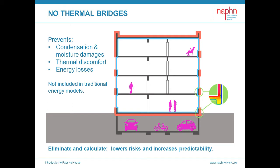Traditional energy models don't account for thermal bridges, and this is a big contributor to the oversizing of mechanical systems — we're going to do it just to be safe. In passive house, we look carefully at all these connections and junctures. We work through the construction details and eliminate the thermal bridges entirely, or we minimize them, calculate them, and include them in our PHPP energy models. This results in increased predictability, lower risk, and holistic optimization of the construction.